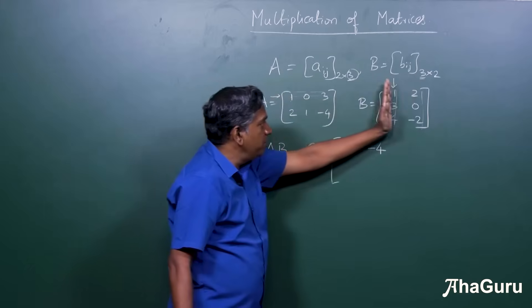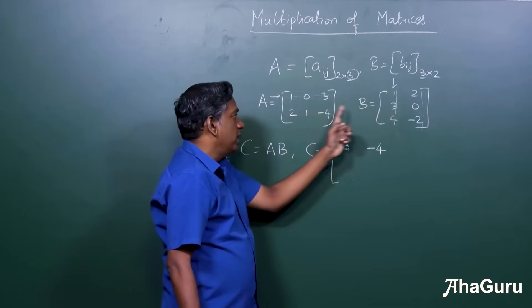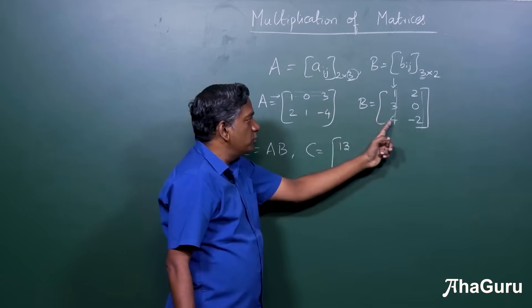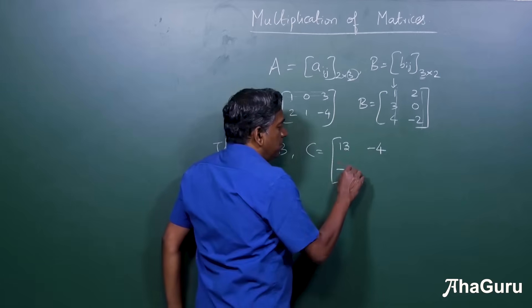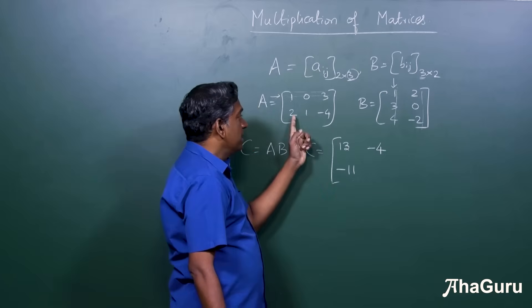Second row by first column is 2 into 1, which is 2, 1 into 3, which is 3. So 2 plus 3 is 5. Minus 4 into 4 is minus 16. So this will be minus 11. 5 minus 16 is minus 11.